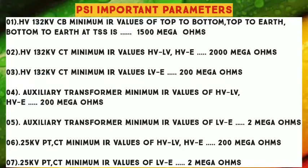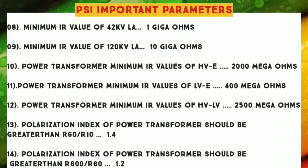Number 6: 25 KV PT and CT Minimum IR Values of HV-LV and HV-A — 200 Mega Ohms. Number 7: 25 KV PT and CT Minimum IR Values of LV-A — 2 Mega Ohms. Number 8: Minimum IR Value of 42 KV Lightning Arrester — 1 Giga Ohm.